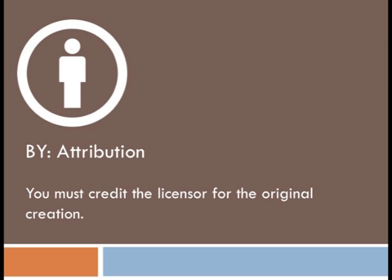All six of the Creative Commons licenses include the symbol for attribution — sometimes referred to as the bathroom man. That simply means that as a licensee, as anybody wanting to reuse a piece of music in a video, you need to credit the licensor for their original creation. That requirement is in all six of the Creative Commons licenses. If you as a licensor don't want to require that, you can waive it, or you could also think about using CC0, which is our public domain dedication.